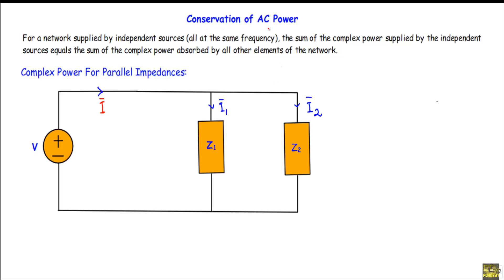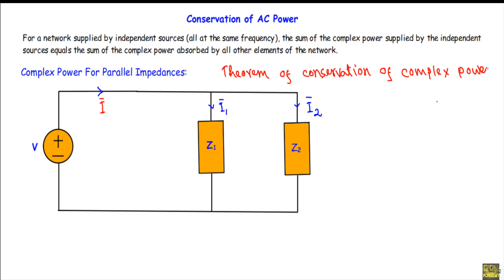In this video I will talk about the conservation of AC power, also known as the theorem of conservation of complex power. The theorem of conservation of complex power states that for a network supplied by independent sources all at the same frequency, the sum of complex power supplied by the independent sources equals the sum of the complex power absorbed by all other elements of the network.